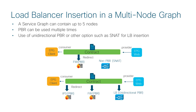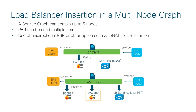We've been using a load balancer-only service graph, but in actual deployment you probably have a firewall or IPS in front of the load balancer. For example, between the client EPG and web EPG, the first node is IPS, the second node is firewall, and then the last node is the load balancer.